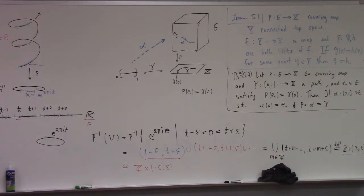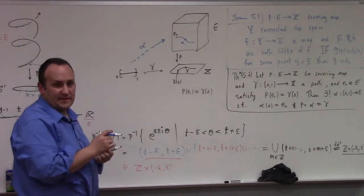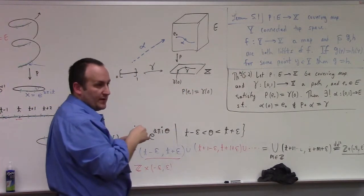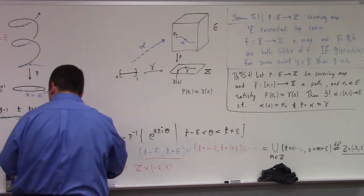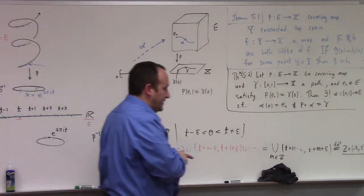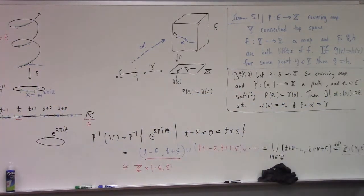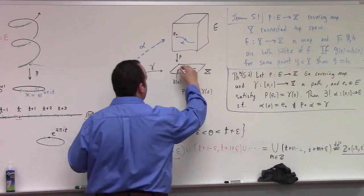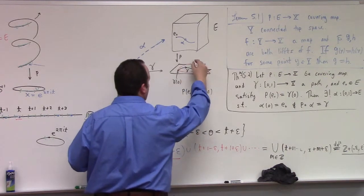And p(e₀) goes to γ(0). We don't get to say that the end point of γ is matched by the end point of the lift. So an interesting example of this could be something like this - could be a loop.